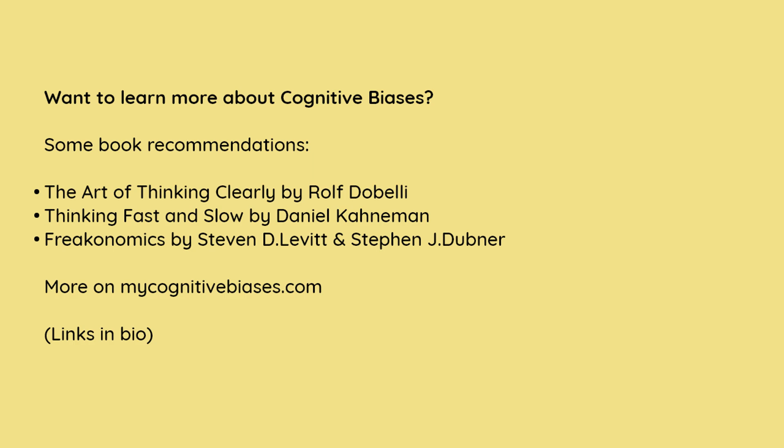Want to learn more about cognitive biases? Some book recommendations: The Art of Thinking Clearly by Rolf Dobelli, Thinking Fast and Slow by Daniel Kahneman, Freakonomics by Stephen D. Levitt and Stephen J. Dubner. More on MyCognitiveBiases.com.